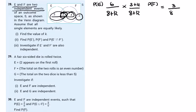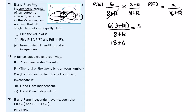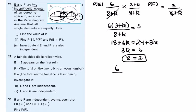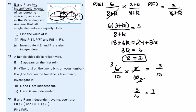Multiply across by (8 + k) to clear denominators. That gives 6 times (3 + k) over (8 + k) equals 3, so 18 + 6k equals 24 + 3k. Bringing 3k to the left: 3k = 6, so k = 2. Checking: 6/10 times 5/10 equals 3/10, and indeed 3/10 = 3/10, confirming they are independent.